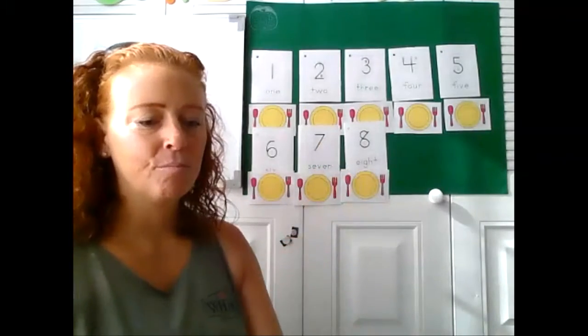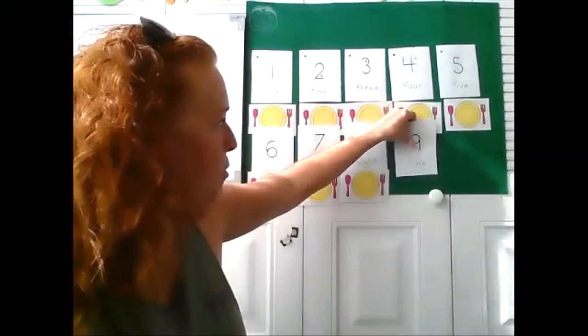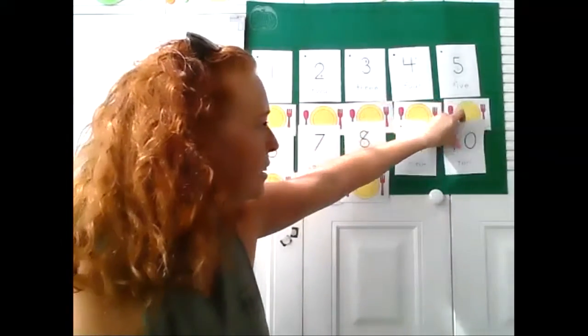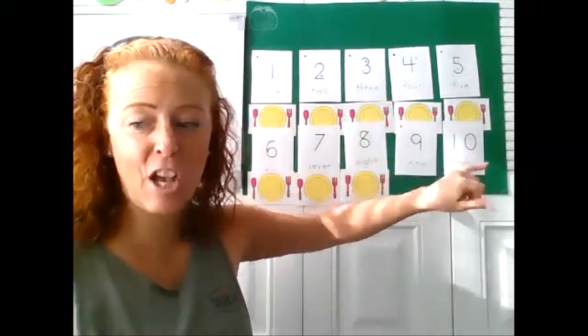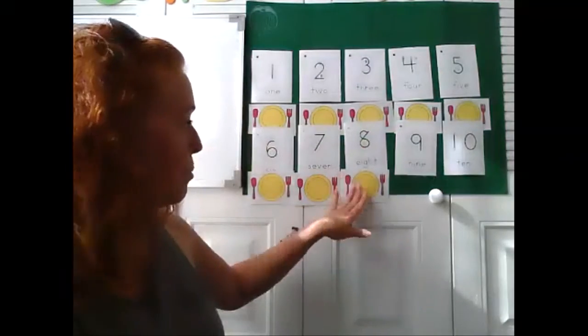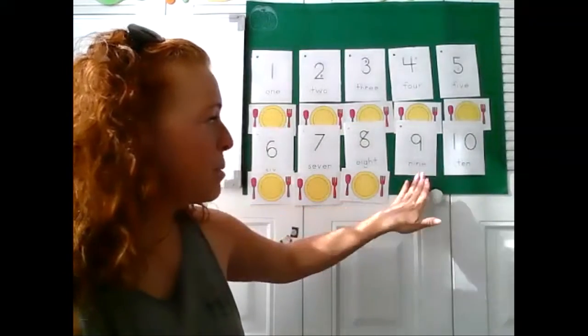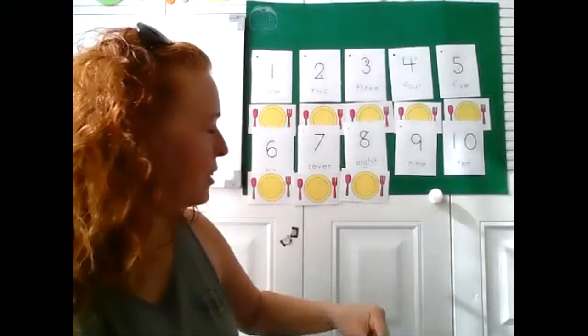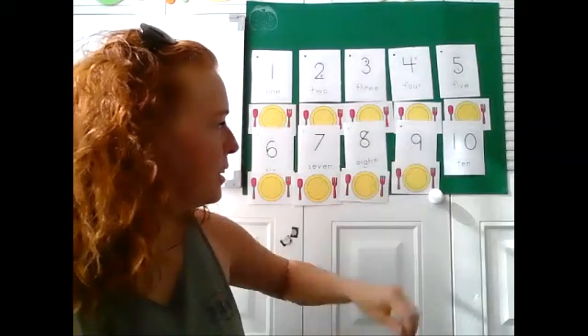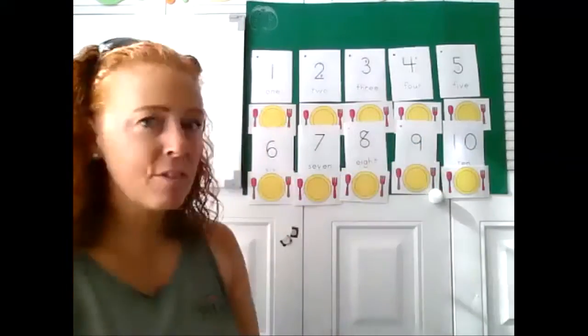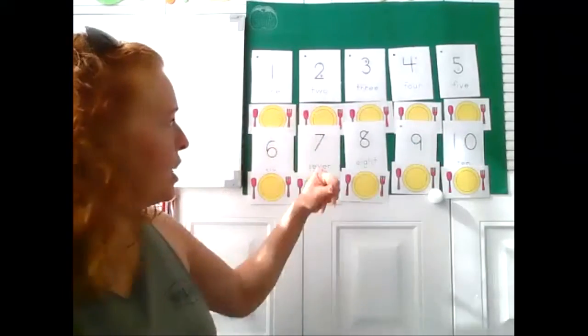Oh, and now two more people are showing up for dinner. Now we have 10 friends coming for dinner. And how many more place settings do we need? We have eight. So we need one, two more to make nine and 10. Nine, 10. We have 10 friends coming for dinner. Look at that.